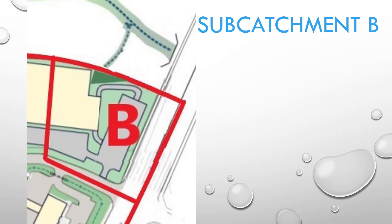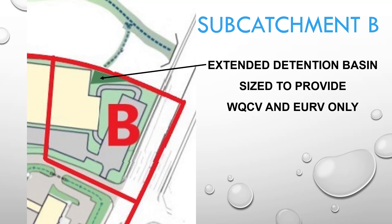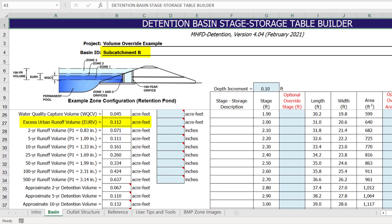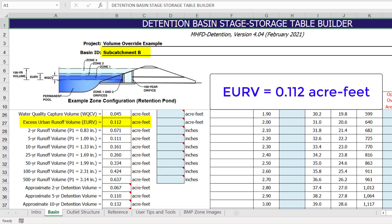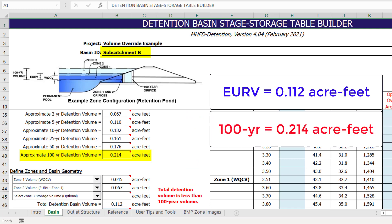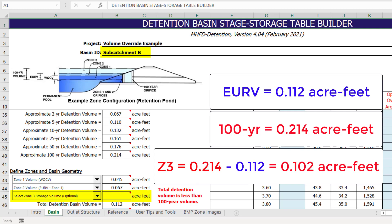In order to determine the additional storage volume and reduced release rate required, the detention workbook was used to size the smaller extended detention basin in sub-catchment B for the water quality capture volume and excess urban runoff volume. The excess urban runoff volume was calculated at just over one-tenth of an acre foot. The workbook also calculated an approximate 100-year detention volume of just over two-tenths of an acre foot. Therefore, the additional flood control volume not provided in Zone 3 was approximately one-tenth of an acre foot, which will be added to sub-catchment A to compensate.